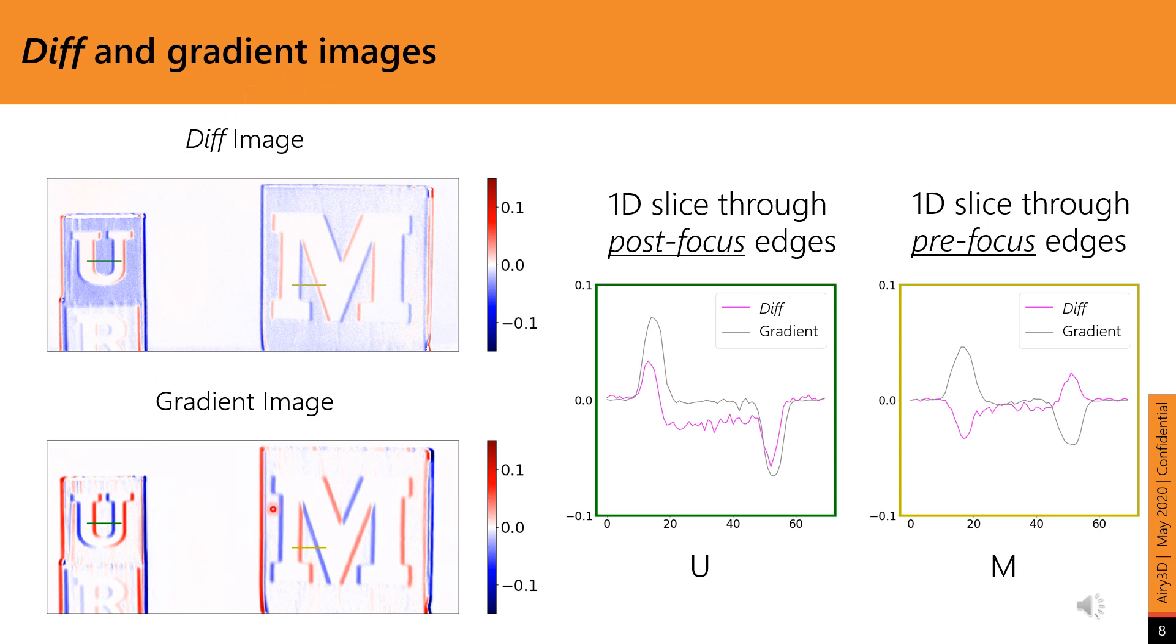In the diff and gradient images on the left, there is a slice through the U's and another one through the M's. On the right, we show the corresponding line plots. The plot on the left is through the U's while the one on the right is through the M's. The peaks in these plots correspond to the edges.